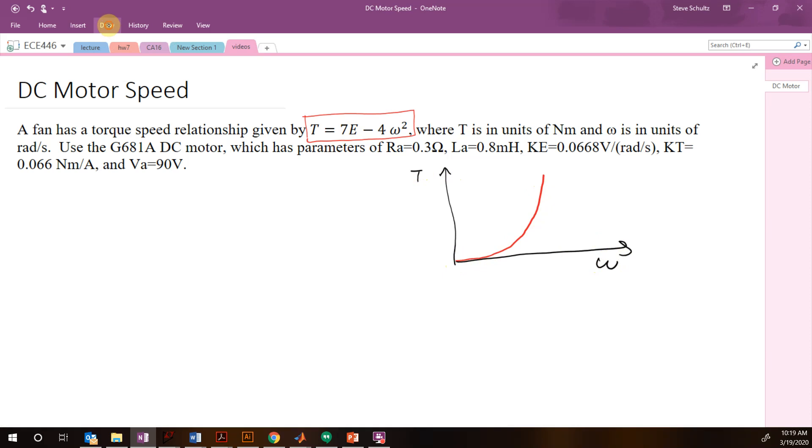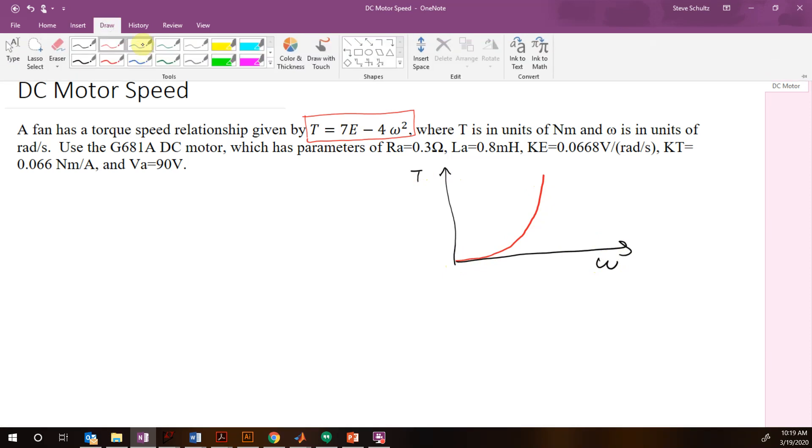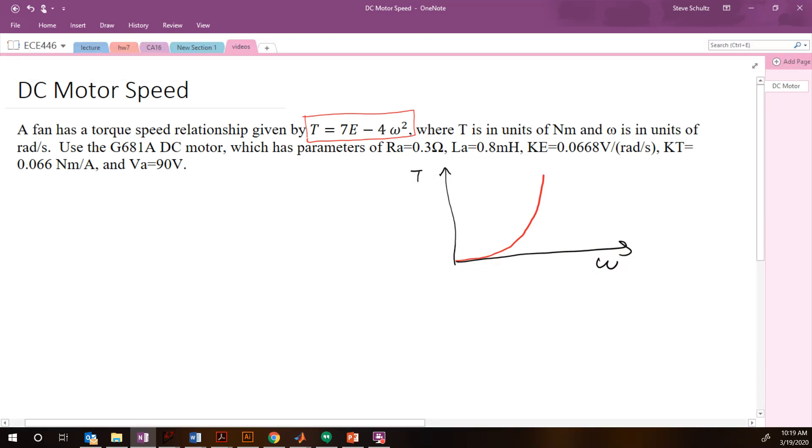So if we remember from our motor, our motor is going to have a torque-speed relationship that looks like this. So you can see wherever these two cross, that's going to be the speed that we're going to run at. So first of all, we have to get the torque-speed of our motor.